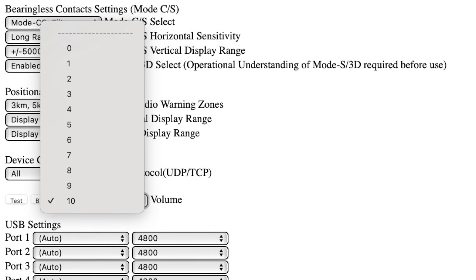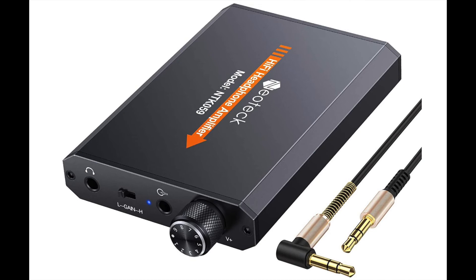The next configurable tab determines the output volume that goes to your intercom or other device for the voice alerts. This range is from 0 to 10 and the level you set depends on the input device into which you are providing the audio alert. The output from PilotAware comes via a 3.5mm jack and the best devices into which to interface this are the intercom or your aviation frequency radio. It is also possible to cable directly to noise-cancelling headsets or to traditional David Clark headsets, although the latter will require a small amplifier in between. Many customers have used amplifiers such as this Neotech from Amazon.